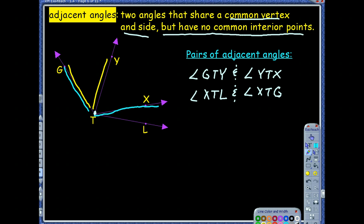So they have common interior points. So therefore they're not adjacent. So basically they had the common vertex and common side, but they have common interior points. So that wouldn't work.